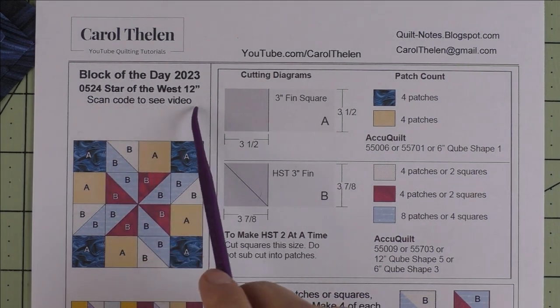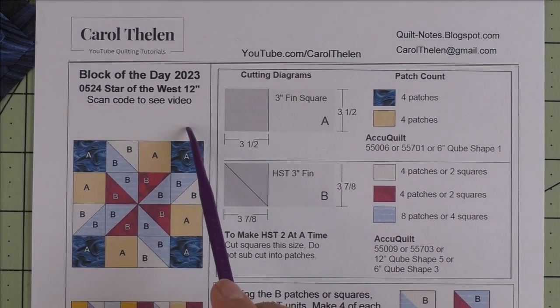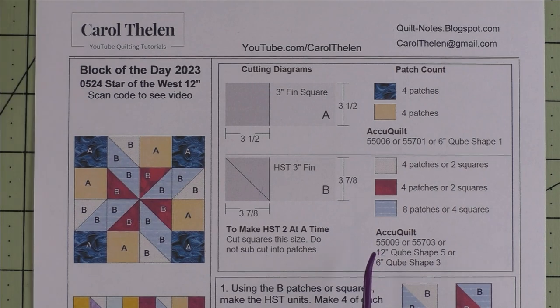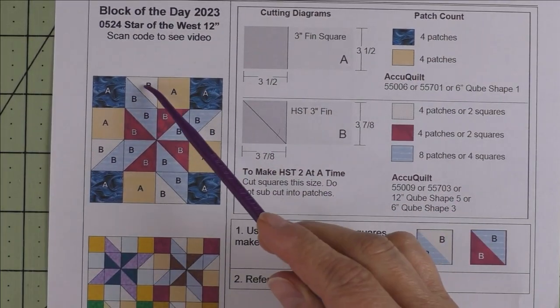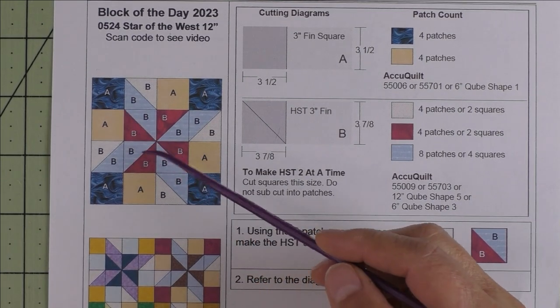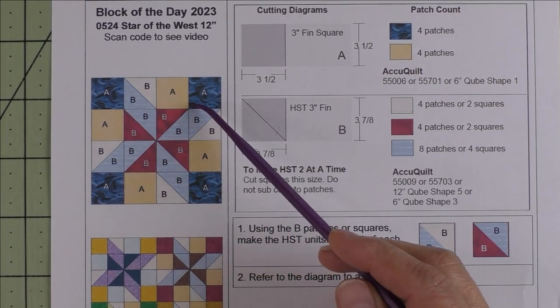This is Star of the West, a 12-inch finished block. This is a very easy block to cut and to piece. We only have half-square triangles and squares in this block. Both are finished at three inches.